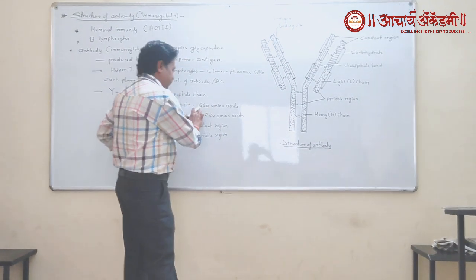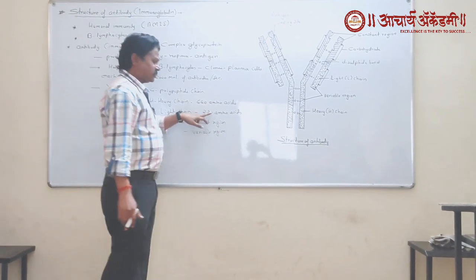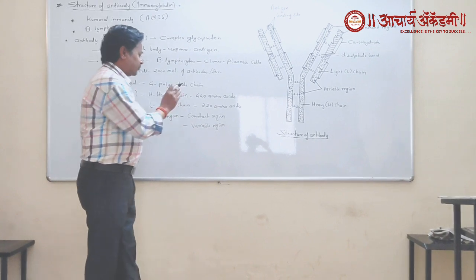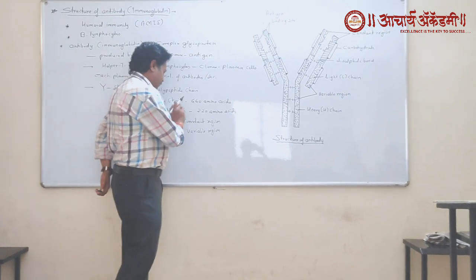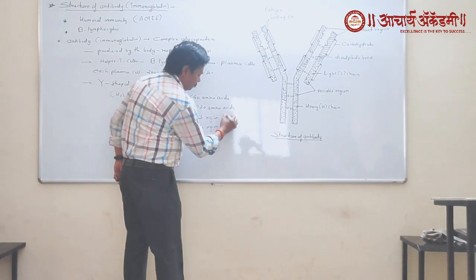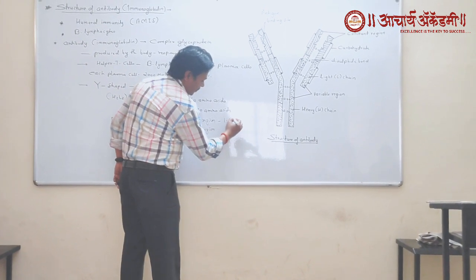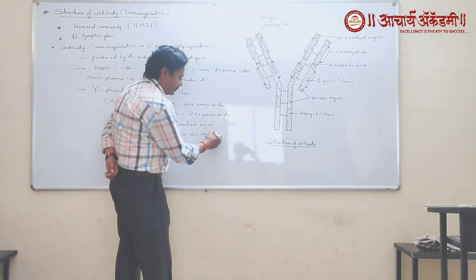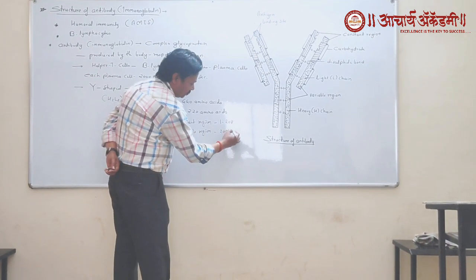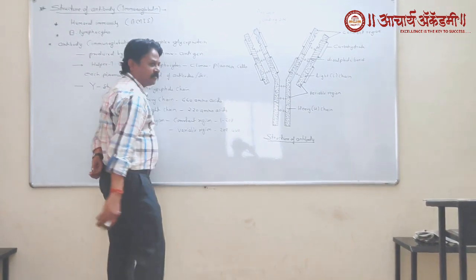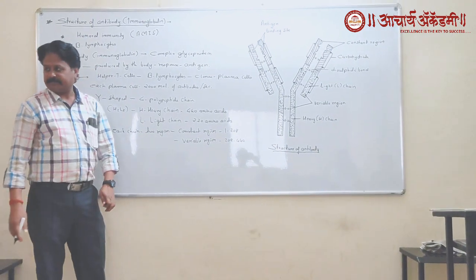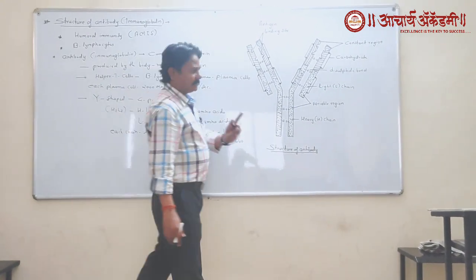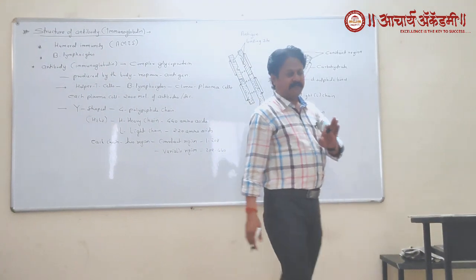The heavy chain consists of 440 amino acids. Out of these 440 amino acids, positions 1 to 208 are responsible for the formation of the constant region, and positions 209 to 440 are responsible for the formation of the variable region. So the constant region has the same amino acid sequence, and the variable region has a different sequence.